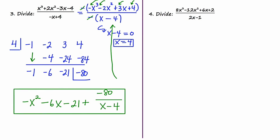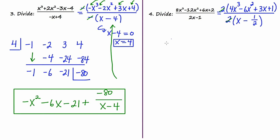Let's do one more example. In number 4, the slope of the divisor is 2, so I'm going to have to factor out a 2. Whatever I factor out of the bottom, I have to factor the same thing out of the top. The 2 on the top and the 2 on the bottom cancel out. So I'll do synthetic division on this remaining problem. What goes in the cubby? If you guessed 1 half, you're correct. This is the first example where we have a fraction in the cubby, but that's okay — it can happen.